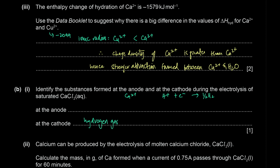In dilute chloride solutions, oxygen is discharged at the anode because the electrode potential for oxygen is slightly more favorable. But in concentrated/saturated chloride solution, the high concentration of Cl⁻ means chlorine gas is discharged. So: saturated/concentrated → chlorine; dilute → oxygen.